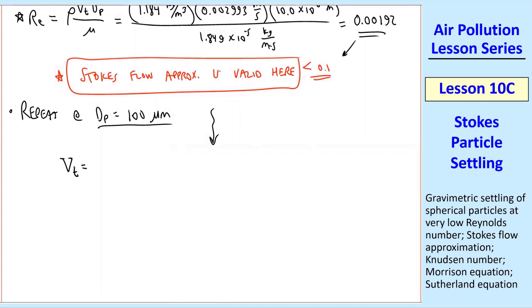If you plug in everything and this is good practice for you, make sure you get these numbers. I get VT is 0.295 meters per second, much faster, which we expect because it's a bigger particle that's going to fall faster. And then I get RE is 1.89.